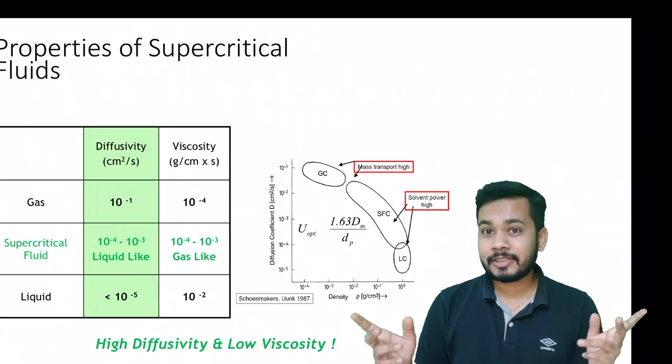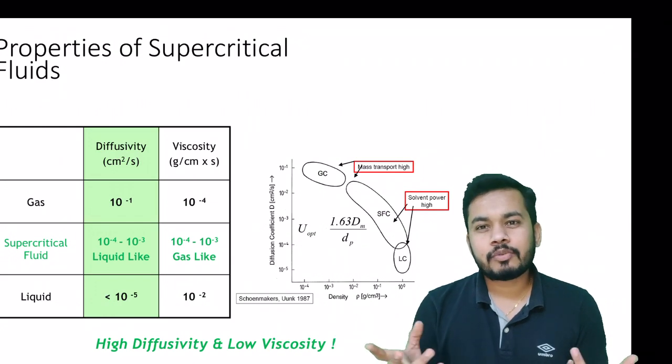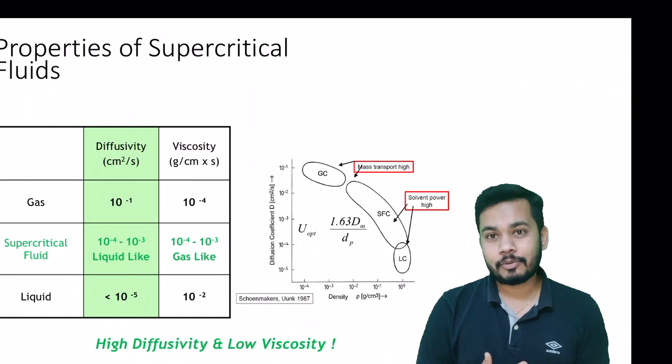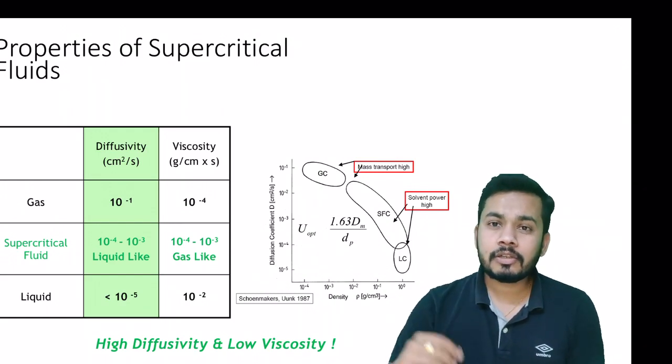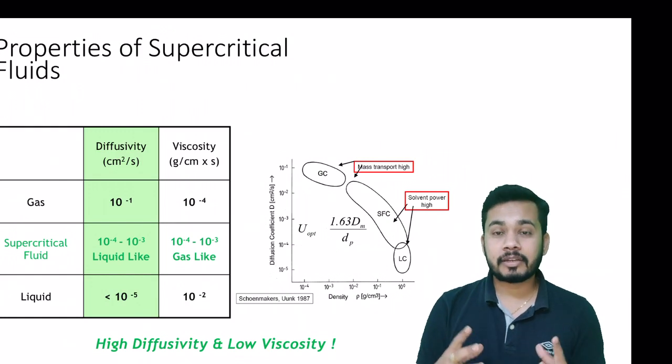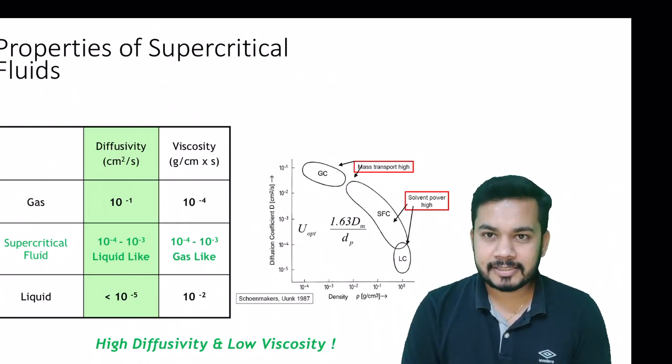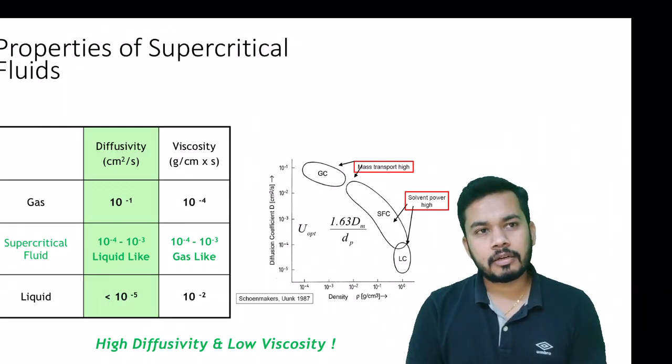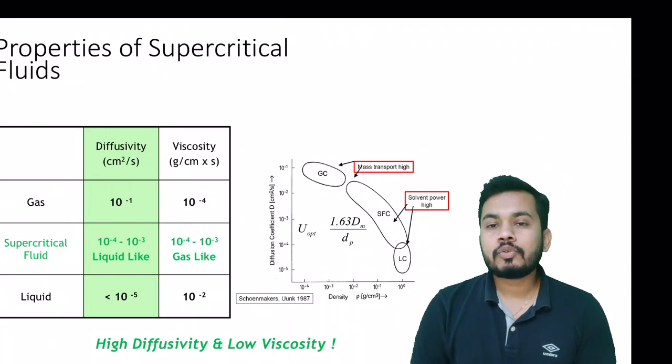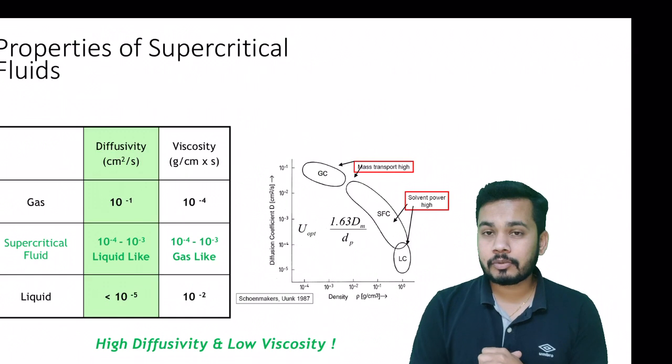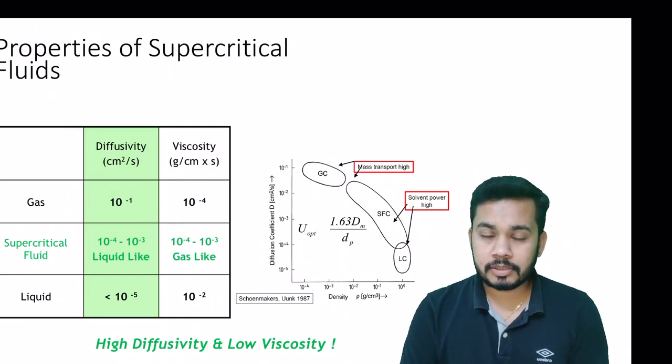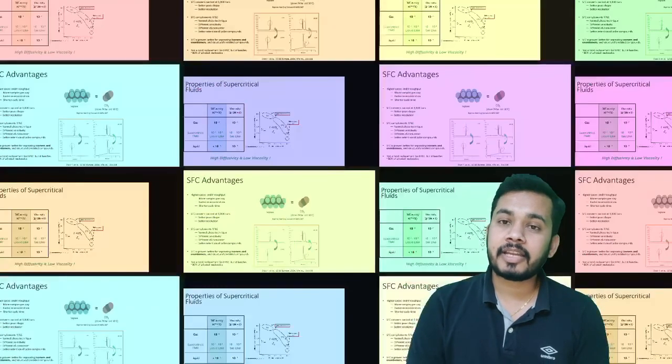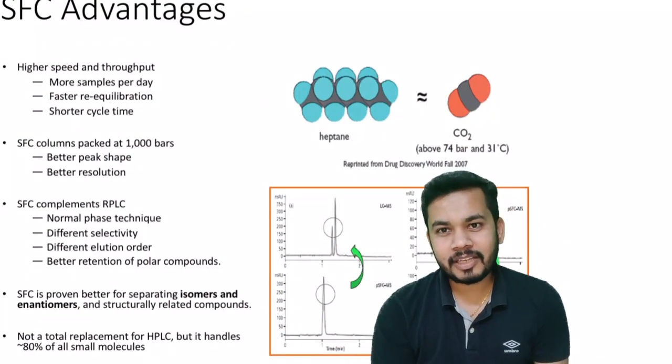We are blessed with CO2. Yes, CO2 is harmful for our earth, but we can utilize CO2 as our supercritical fluid because CO2 has the ability to maintain the supercritical region within 31 degrees Celsius and 73 bar pressure. That is much more convenient to achieve in our laboratory. When CO2 goes into the supercritical region it gets very low density and very high diffusivity.